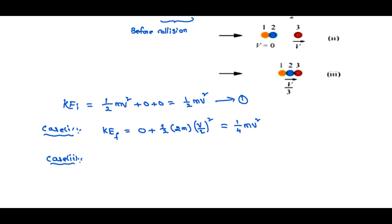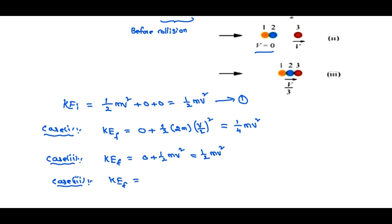In case two, the first and second particles move together with velocity zero but particle three moves with velocity v, so the kinetic energy equals zero plus half m v squared, which equals half m v squared. For case three, all three particles move together with velocity v/3, so the kinetic energy equals half times 3m times (v/3) squared, giving one-sixth m v squared.